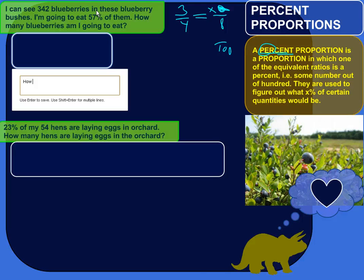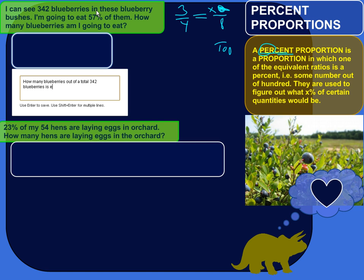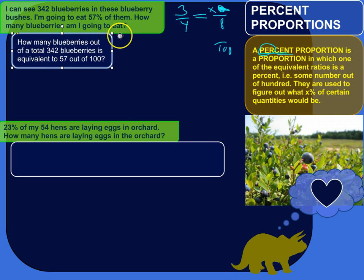So maybe something like, how many blueberries out of a total 342 blueberries is equivalent to 57 out of 100? That's a way I could rephrase this situation here. I'm looking for a certain number of blueberries out of 342 is equivalent to 57 out of 100, also known as 57%.